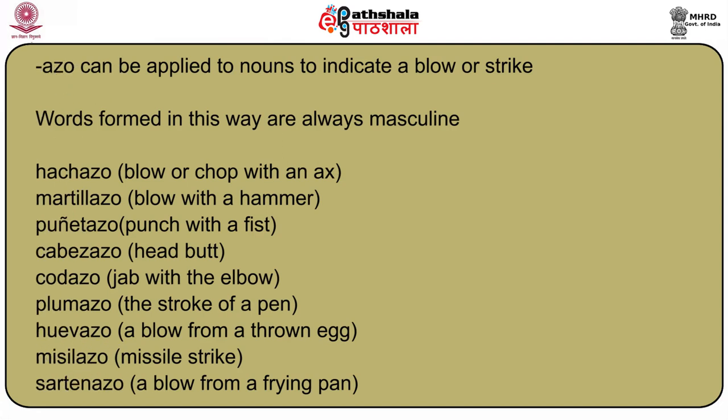The suffix -azo can be applied to nouns to indicate a blow or strike. Words formed in this way are always masculine: hachazo (a chop with an axe), martillazo (a blow with a hammer), puñetazo (a punch with a fist), cabezazo (a headbutt), codazo (a jab with the elbow), pluma → plumado (stroke of a pen), huevo → huevaso (blow from a thrown egg), misil → misilaso (missile strike), sartén → sartenaso (a blow from a frying pan).